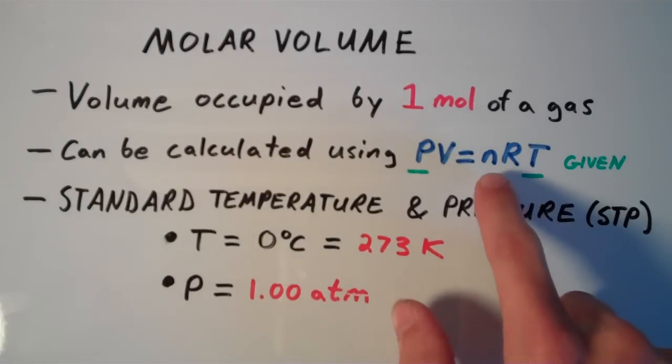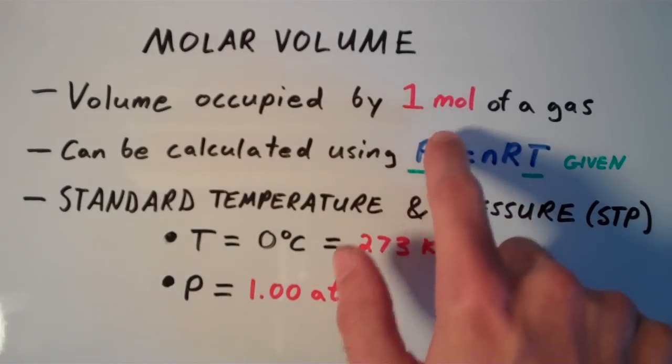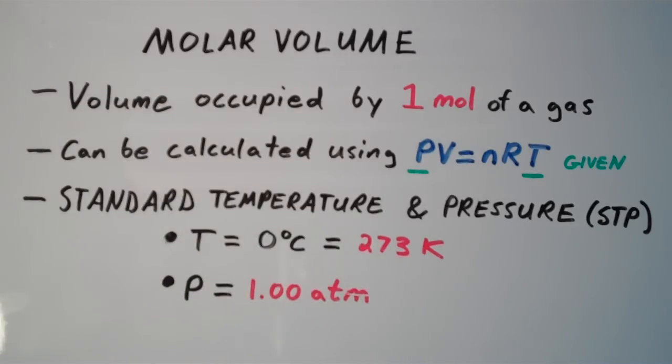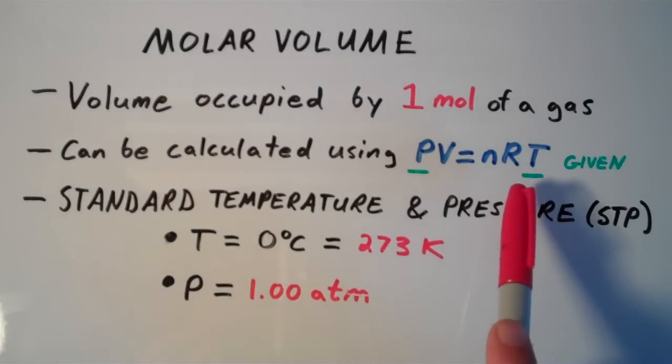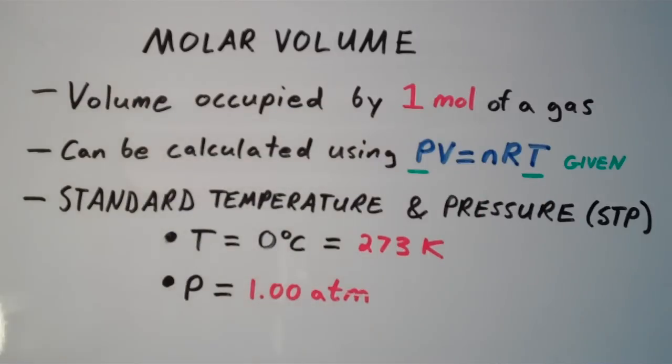So we have n. We define that to be one mole by definition of molar volume. We have T at STP and we have P at STP. So the R is a constant. So that means we can solve for the volume. So how about we calculate the molar volume of a gas, of an ideal gas at STP, standard temperature and pressure.